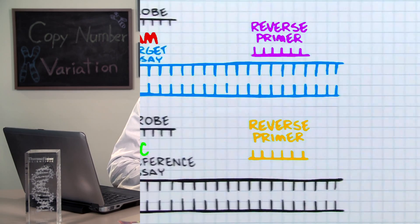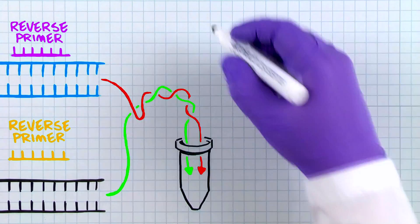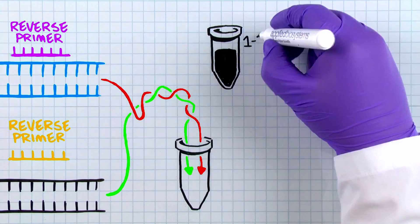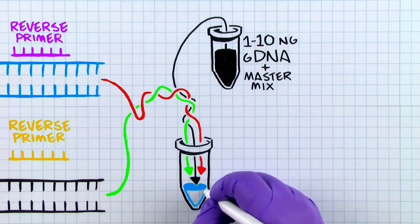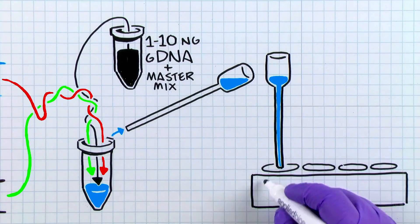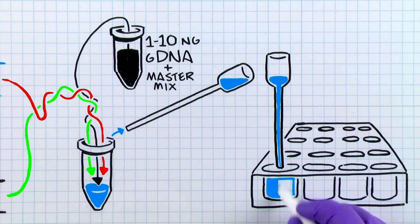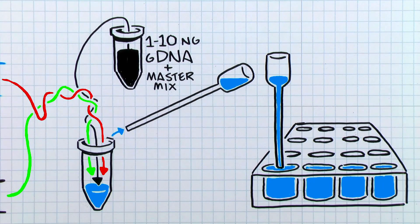To determine copy number, a relative quantitation analysis is performed between the unknown sample and a calibrator sample, one in which the copy number of the target gene is known. The sample is combined with both assays, master mix, and then run in quadruplicate in the real-time PCR instrument.